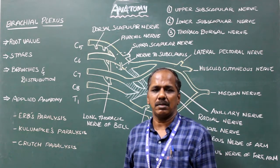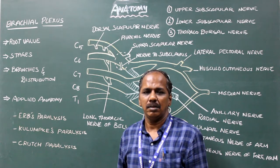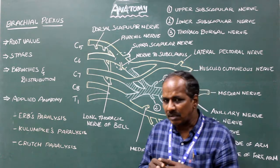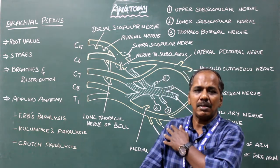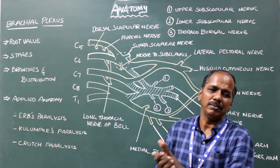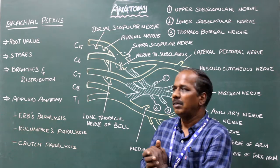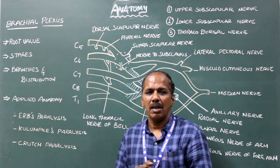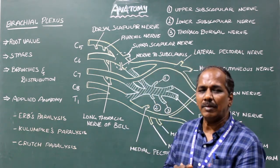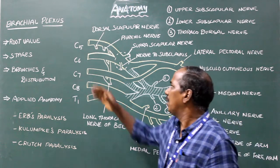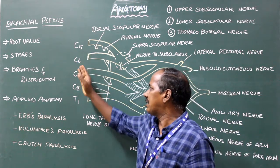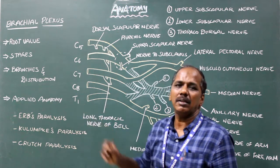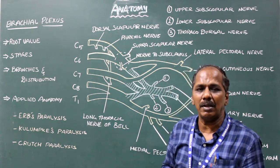Brachial plexus. It is the network of nerves which supplies the upper limb. Root value: anterior primary rami of C5, C6, C7, C8 and T1 spinal nerves.